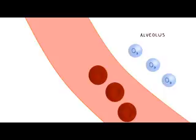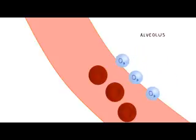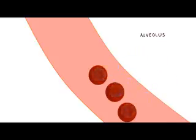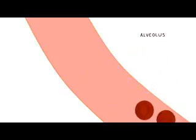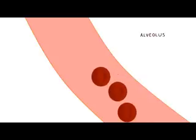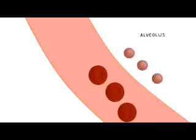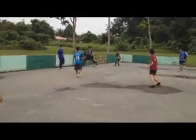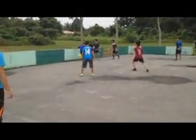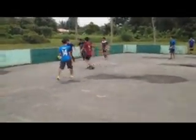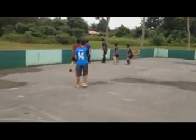The formation process of oxyhemoglobin and carboxyhemoglobin in our blood shows a very significant example of chemical equilibrium in our daily life. This process is also important because it helps to regulate and balance the amount of oxygen in our body.